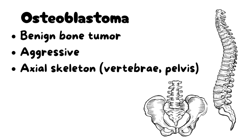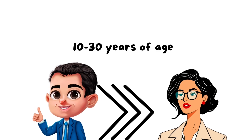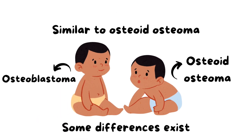Osteoblastoma is a benign bone tumor. It is a locally aggressive tumor and is more commonly present in the axial skeleton, which includes the vertebral body and the pelvis. It is more common in men compared to females, and the common age of occurrence is 10 to 30 years of age.